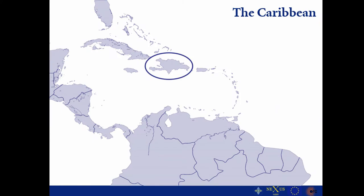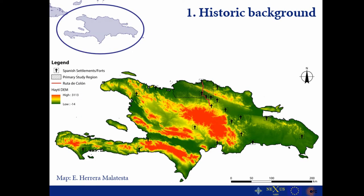For those of you that are not familiar with the Caribbean, this is the Caribbean Arc, which is located in the northern part of South America, the eastern part of Central America, and the southern part of North America. In our particular case, we based our research on the island that is today shared by the Dominican Republic and the Republic of Haiti, particularly on the north central part of this island.